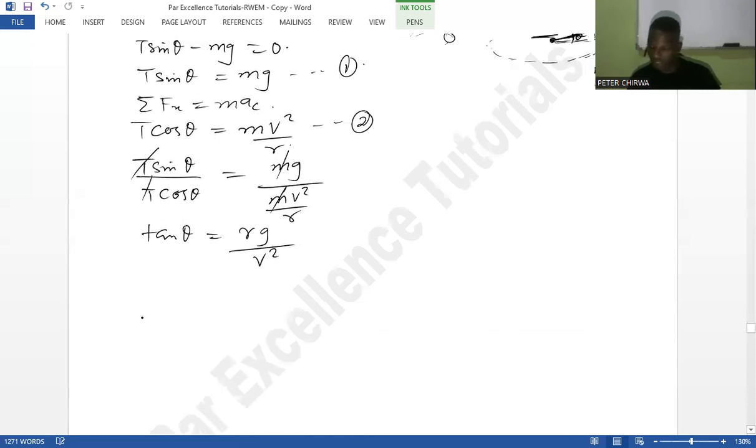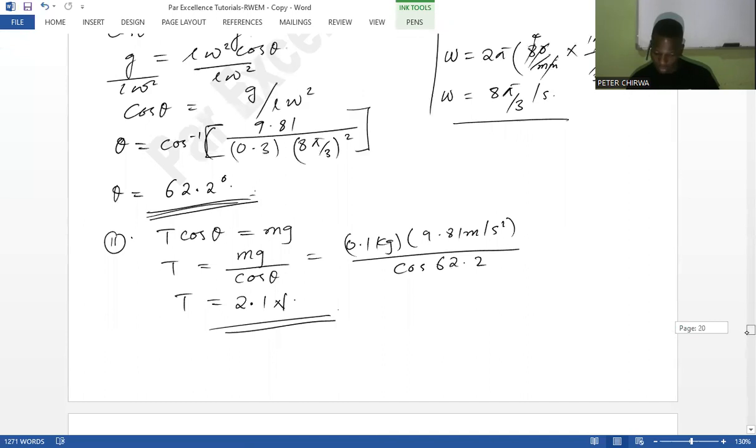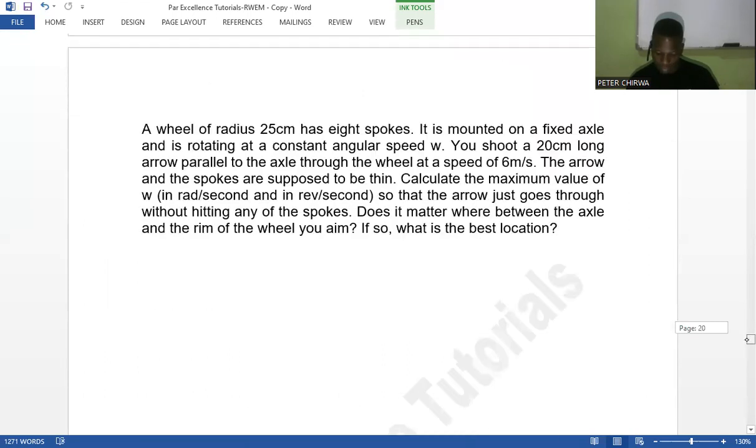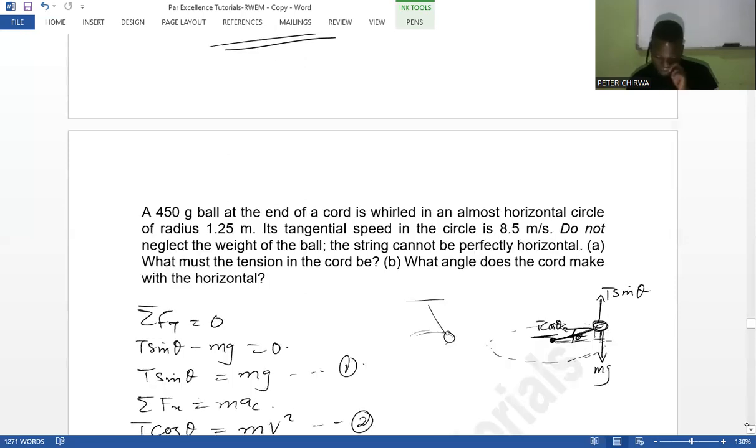Here now I was given the velocity there, the tangential velocity, in the question and it was... what was the tangential velocity? The tangential velocity is 8.5 meters per second and the radius is 1.25 meters and the mass of the ball is 450 grams. That's the mass of the ball.